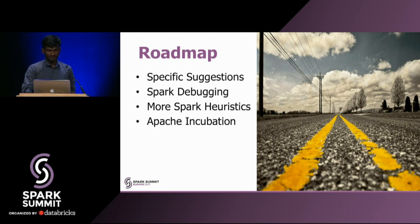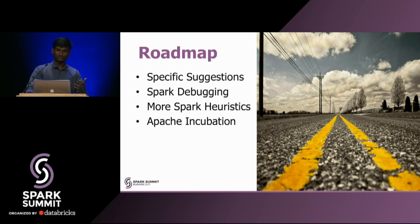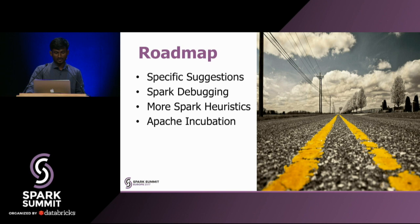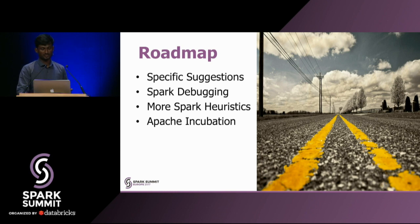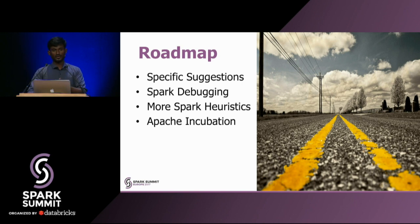Here is the roadmap of Dr. Elephant. We want to give specific suggestions to users — currently Dr. Elephant gives generic suggestions like 'reduce executor memory,' but we would like to give exact values or a range of values that users could set to fix those rules. We also want to improve the debugging experience, as users at LinkedIn find it hard debugging their Spark jobs when they fail — they either don't find the reports or don't know where to look or what logs to look for.